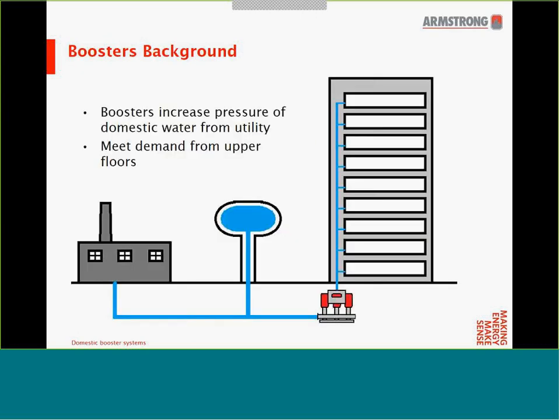Buildings decorate the landscape of major cities around the world. Every building requires clean, safe water for basic human activities such as drinking, cooking, washing dishes, or showering. As buildings started getting taller and taller, the utility is not able to supply enough water to the upper levels. The role of the booster system is to increase the pressure of the water supplied by the utility if not adequate to supply the upper level of the building.